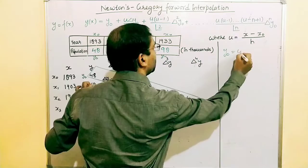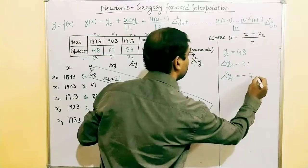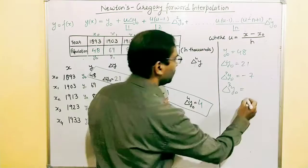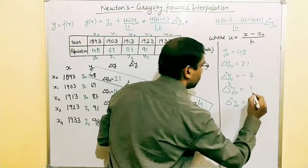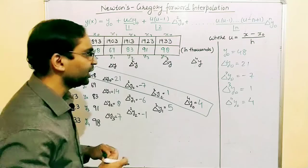Let me save these values: y0 = 48, Δy0 = 21, Δ²y0 = −7, Δ³y0 = 1, and Δ⁴y0 = 4. Now let us calculate u, the other variable needed in the formula.